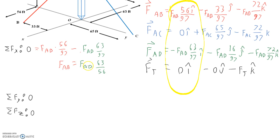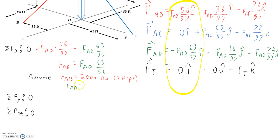To start the problem, we make an assumption — engineering is all about making assumptions. We assume FAB = 2,000 pounds (2 kips) since it's the larger of the two. One kip equals 1,000 pounds. We can then solve for FAD, which comes out to 1.78 kips. Both cables are equal to or less than 2,000 pounds, so we're good so far.